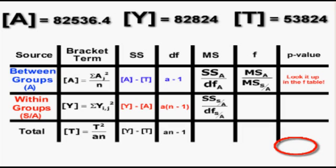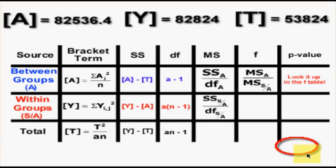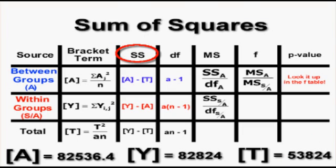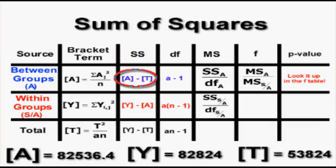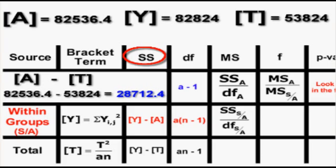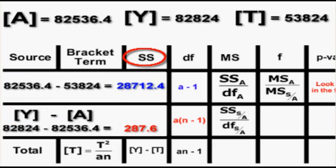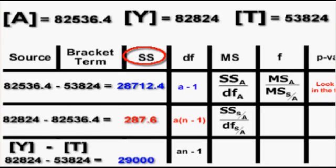Now we know our bracket terms and can calculate the sum of squares — it's simple subtraction. For between group, it's the A bracket term minus the T bracket term. Within group is the Y bracket term minus the A bracket term. And total is the Y bracket term minus the T bracket term.